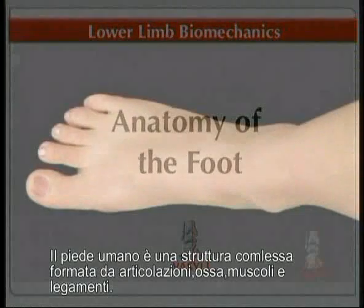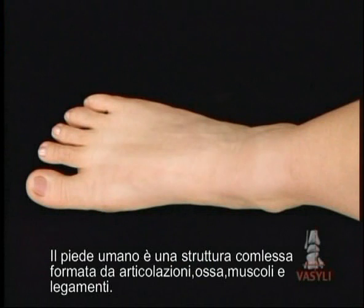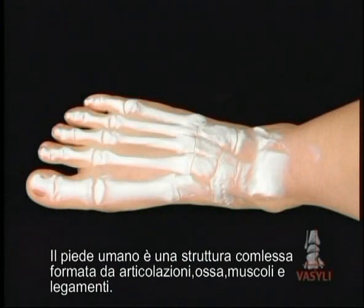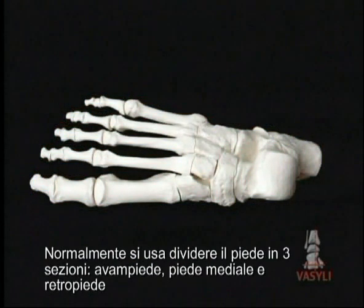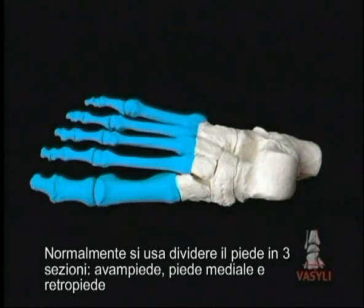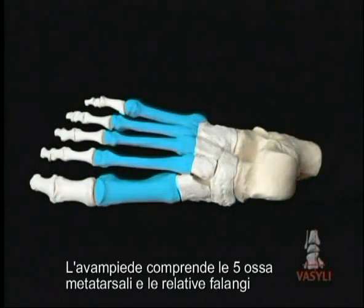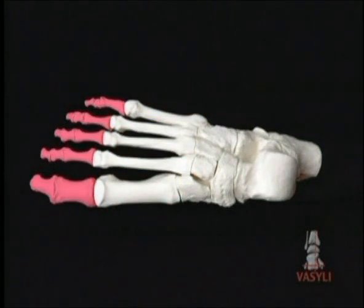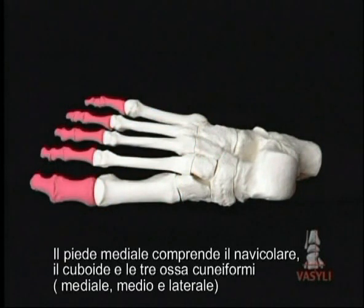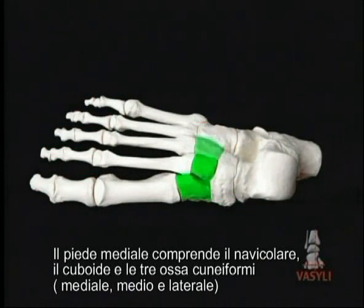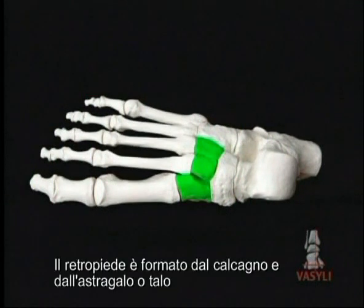The human foot is a complex structure of bones, joints, muscles and ligaments. The foot can be divided into three sections: the forefoot, the midfoot and the rear foot. The forefoot comprises the first to fifth metatarsal bones and phalanges. The midfoot comprises the navicular and the cuboid plus the medial, intermediate and lateral cuneiform bones. The rear foot is made up of the calcaneus and talus.